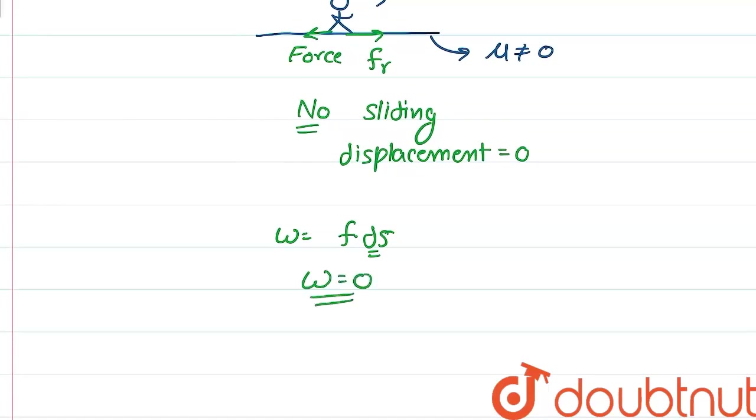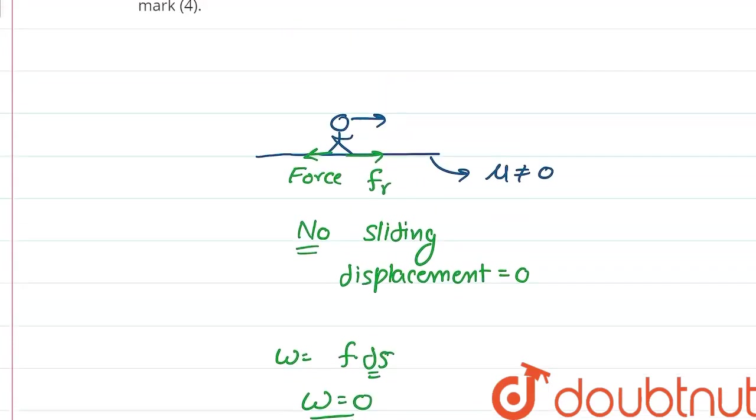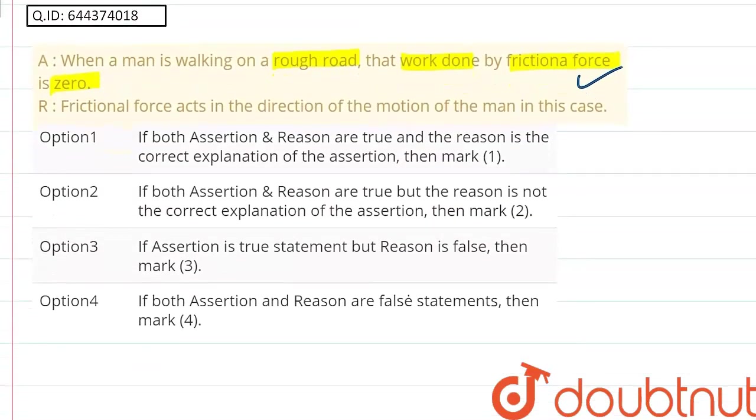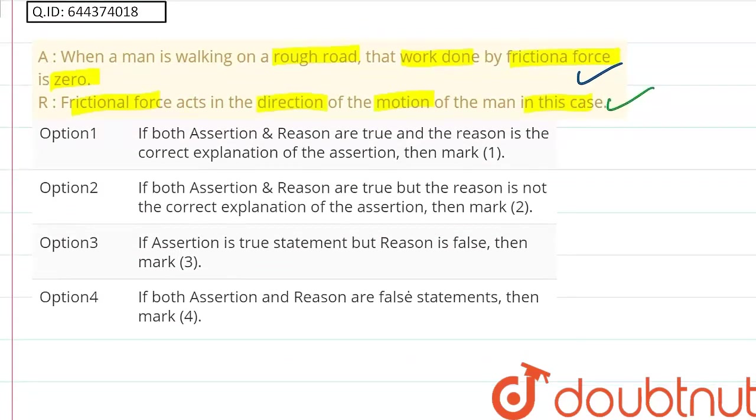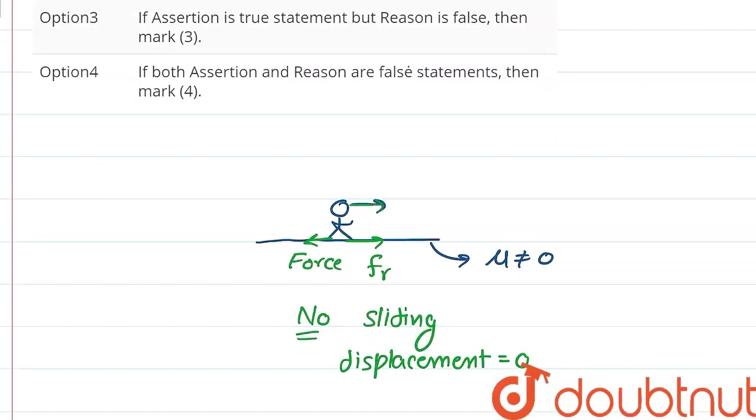Now we will see the reason. The reason says frictional force acts in the direction of motion of the man in this case. This statement is also true. We have seen here that if the man is walking in this direction, his foot will apply a force on the ground in this direction, and the direction of the friction will be opposite to this direction, which is the same as the direction of the man. So they both will be in the same direction.